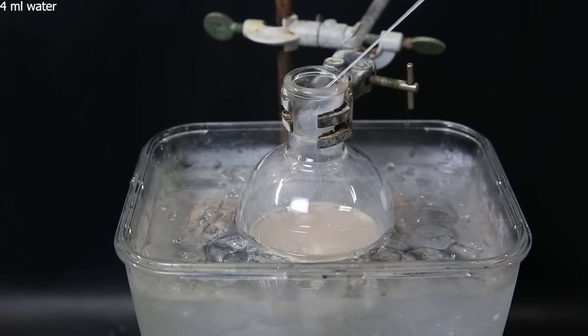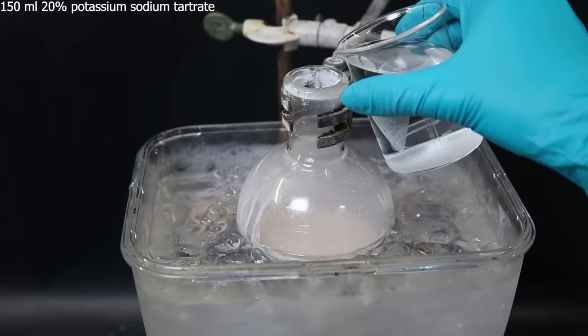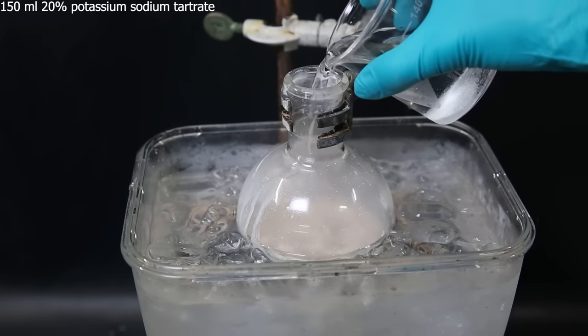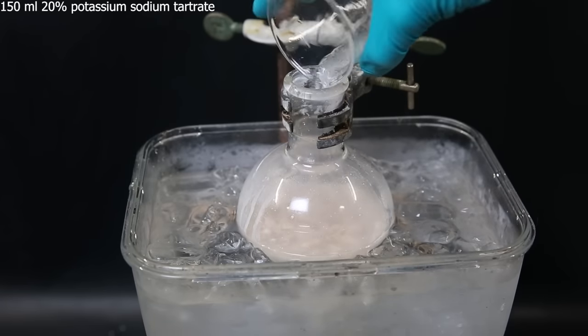Now to destroy any remaining lithium aluminum hydride, I drop-wise add 4 ml of water to the flask. When that is done, I quench the mixture with 150 ml of a 20% potassium-sodium tartrate solution.